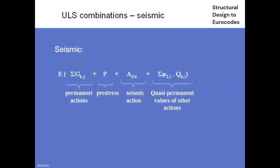Seismic is really a special version of the accidental combination. Again, there are no load factors. The seismic action is the leading action, and for seismic, all other variable actions including traffic have their quasi-permanent value. Since psi_2 for traffic loading is 0, we don't have traffic on the bridge in a seismic event.